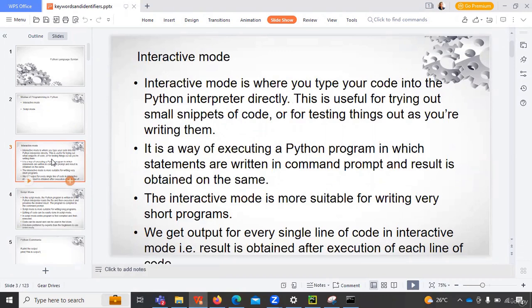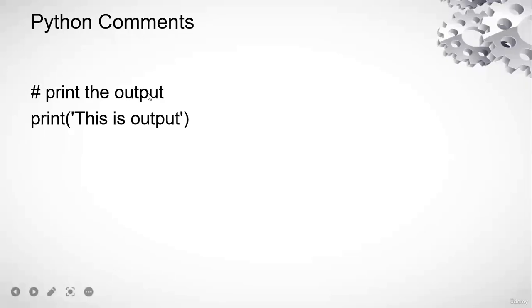In interactive mode, developers write only four to five lines of code and use that code in their program. If there is a modification in only four to five lines of code, they try it on their local machine first and then apply it. That is how interactive mode works in practice.